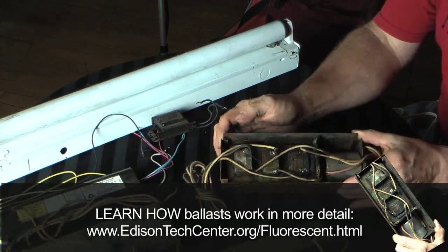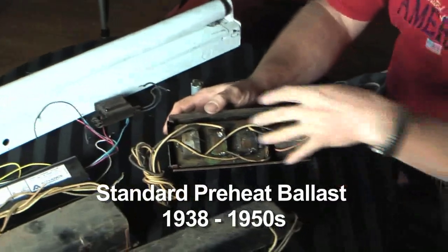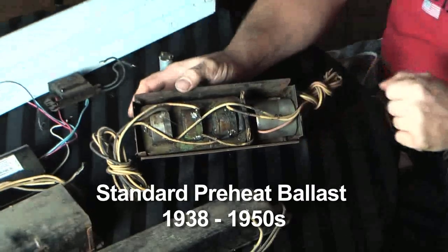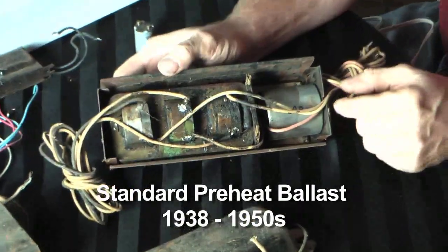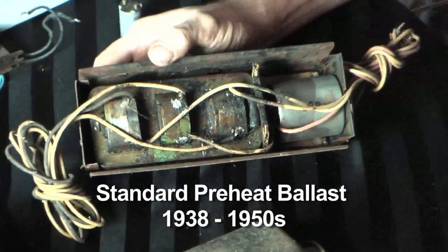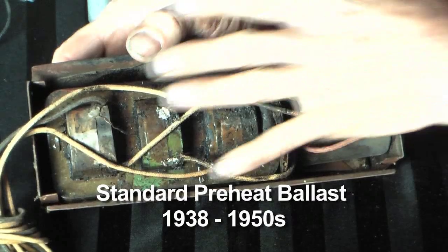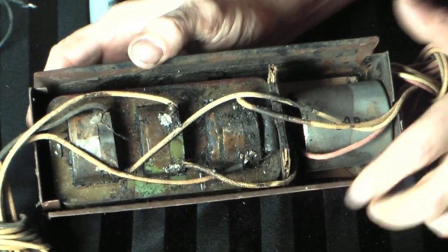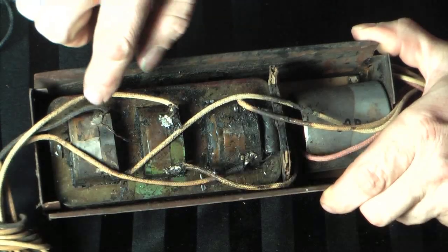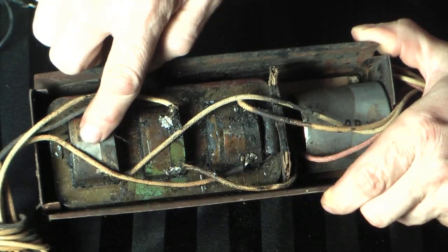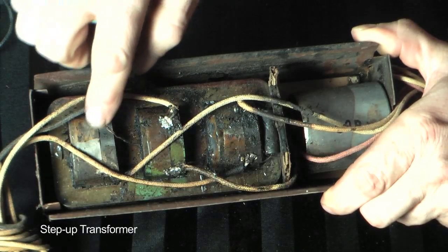Here we have a ballast, this one is from the 1940s, that I took all the tar out of because ballasts are filled with tar to make them run quieter and also to help dissipate heat. And this model is to run two 4 foot 40 watt lamps. And you can see what all is inside of a typical fluorescent ballast. Here is your transformer section. You've got a step up transformer on here which steps 120 volts up to about 200 volts, actually about 216 volts to supply enough voltage to run the lamps.